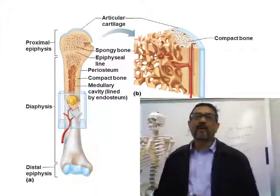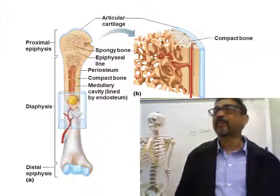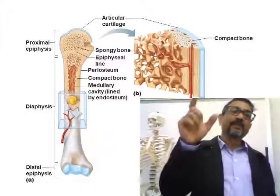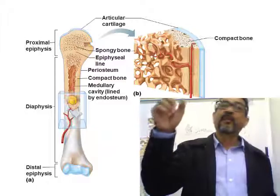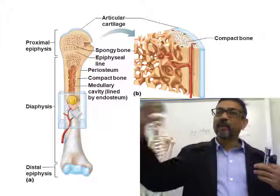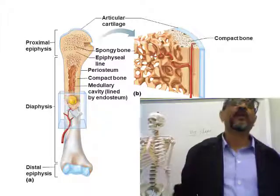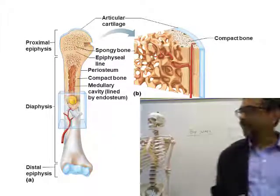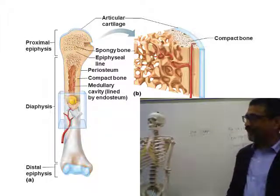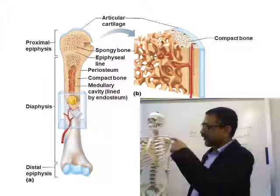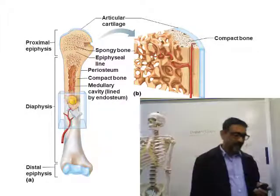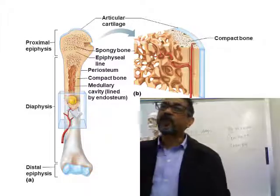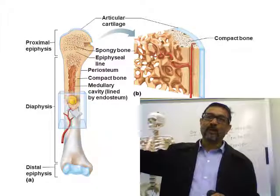Inside the shaft of a long bone you have a cavity called the medullary cavity. That cavity contains red bone marrow in the very early stage of life, and gradually that red bone marrow becomes yellow bone marrow. Inside the spongy bone, however, you always have red bone marrow throughout life — it will not change.